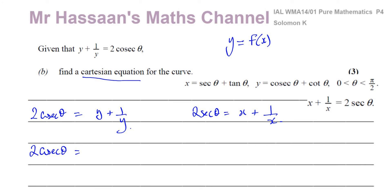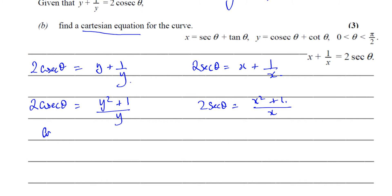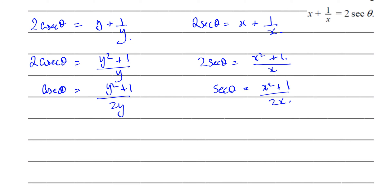So I'll have y² plus one over y for the cosec θ expression, and x² plus one over x for the sec θ expression. Making cosec θ the subject: cosec θ equals (y² + 1)/(2y). And sec θ equals (x² + 1)/(2x). Now writing these as their reciprocal functions: sin θ equals 2y/(y² + 1), and cos θ equals 2x/(x² + 1).